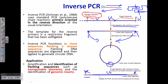You can see how intelligent this technique actually is — it is a very, very brilliant technique. This kind of inverse PCR can be used to identify transposable elements as well as for the identification of genomic inserts — any kind of unknown genomic inserts. We can detect them utilizing this inverse PCR.